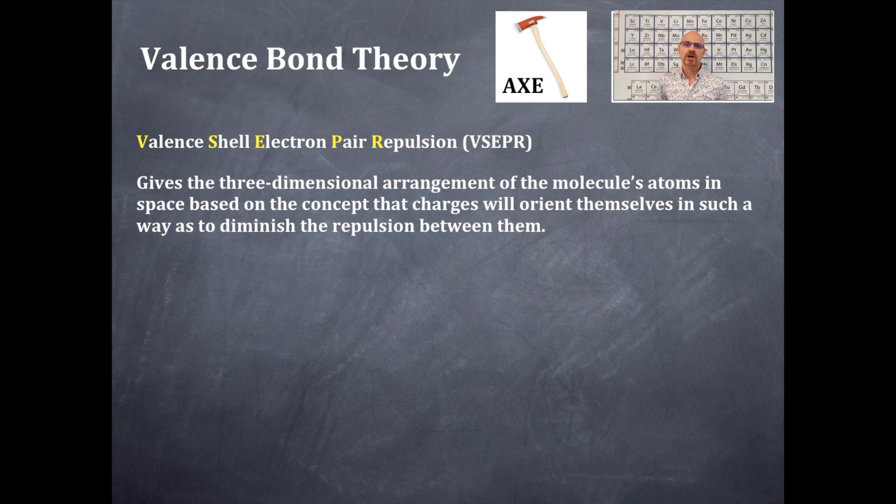That is, electrons are negatively charged and they don't like to be near each other. So they are going to physically move away from each other as far away as possible three-dimensionally. That will give us a shape.